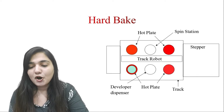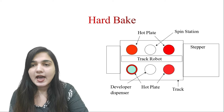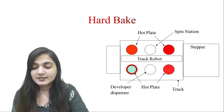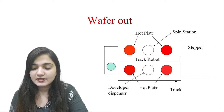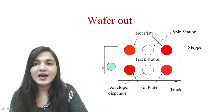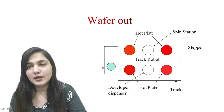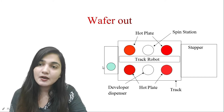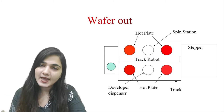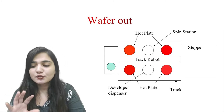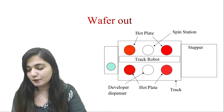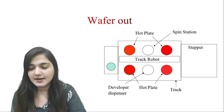This is the full process that is happening inside the step tracker integrated system. After this, the track robot will be giving the output wafer with the full photolithography process completed. This is the integrated system which is doing all of the processes inside it.